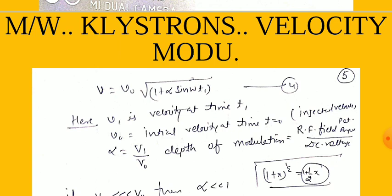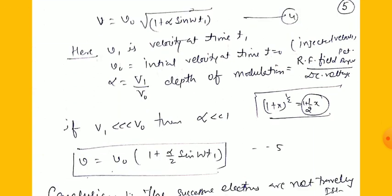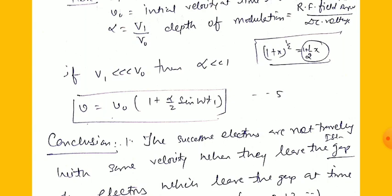This can also be written as v = v₀ · √(1 + α · sin(ωT₁)), where v₀ is the initial velocity of injected electrons at T = 0, and α = V₁/V₀ is called the depth of modulation — the ratio of the RF peak voltage to the DC voltage V₀. When α is very small, using the binomial approximation √(1+x) ≈ 1 + x/2, this reduces to: v = v₀ · (1 + α/2 · sin(ωT₁)).